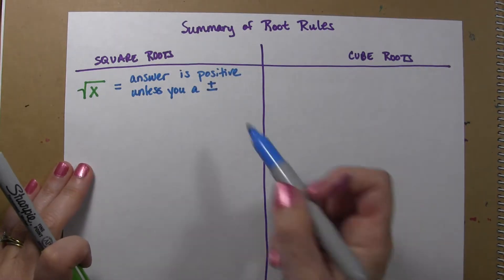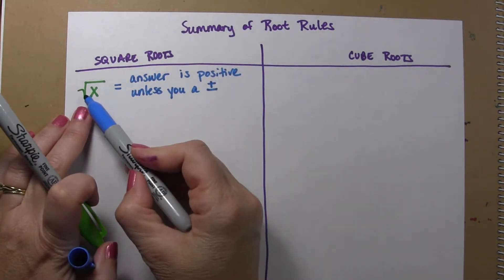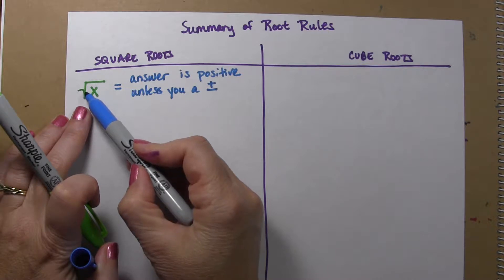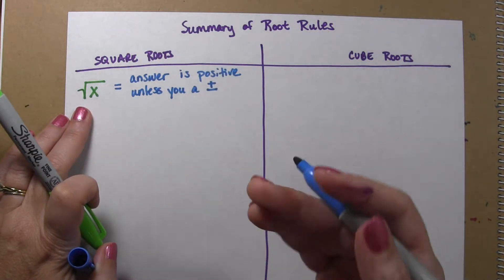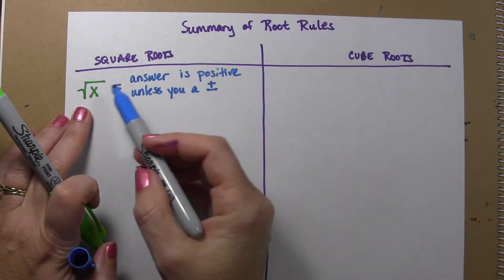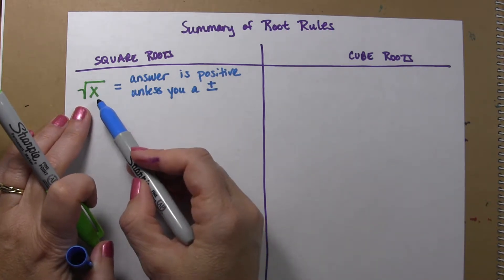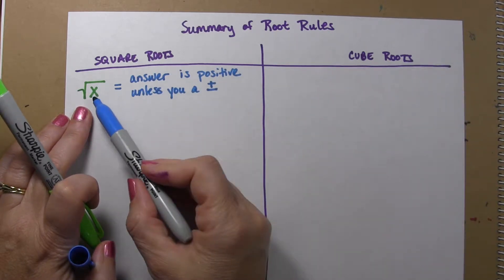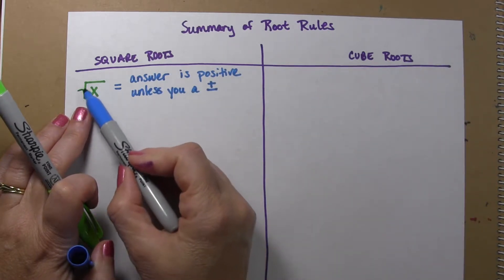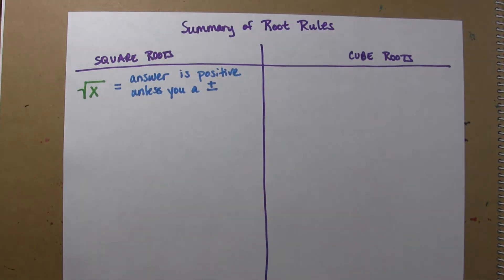Okay, the reason that you know it's going to be positive is because you have this principal square root sign. And so that means that you're always going to return the positive answer to the question. Just the square root symbol, we're going to have a positive answer.